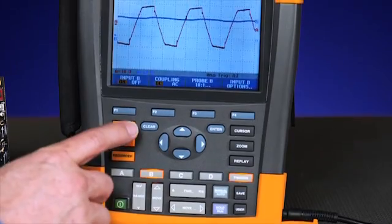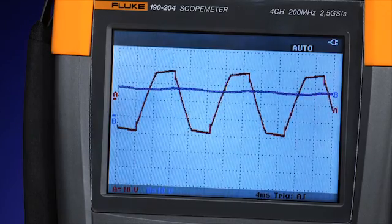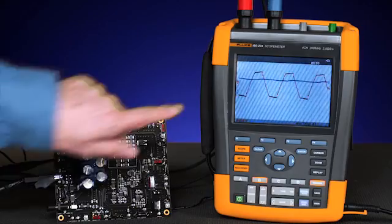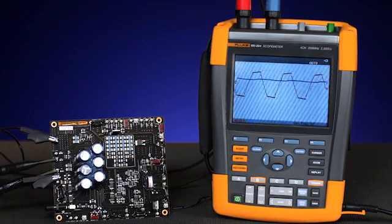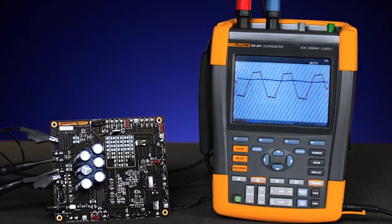Next, turn on channel A to examine both signals simultaneously, checking both the input AC signal and the DC output signal for any correlation of problems that might occur from the input to the resultant output.